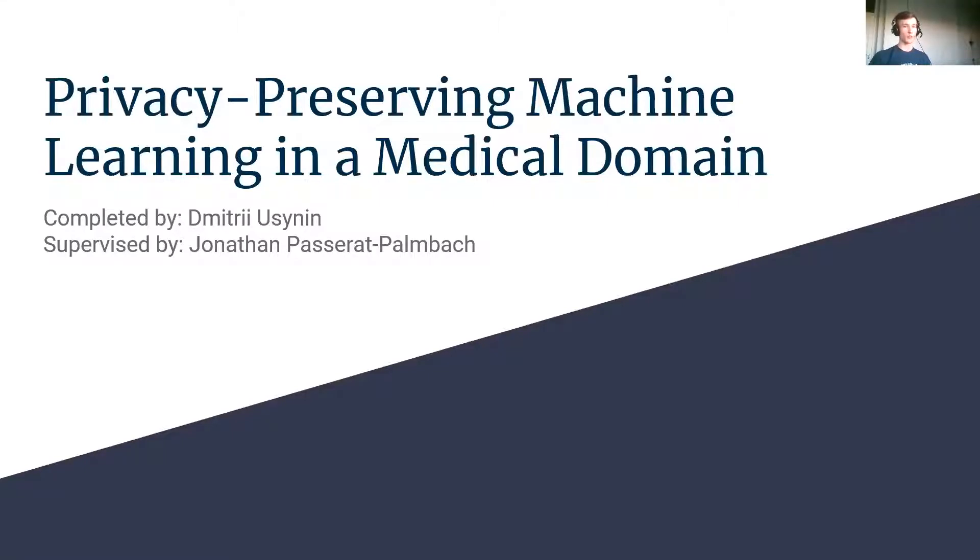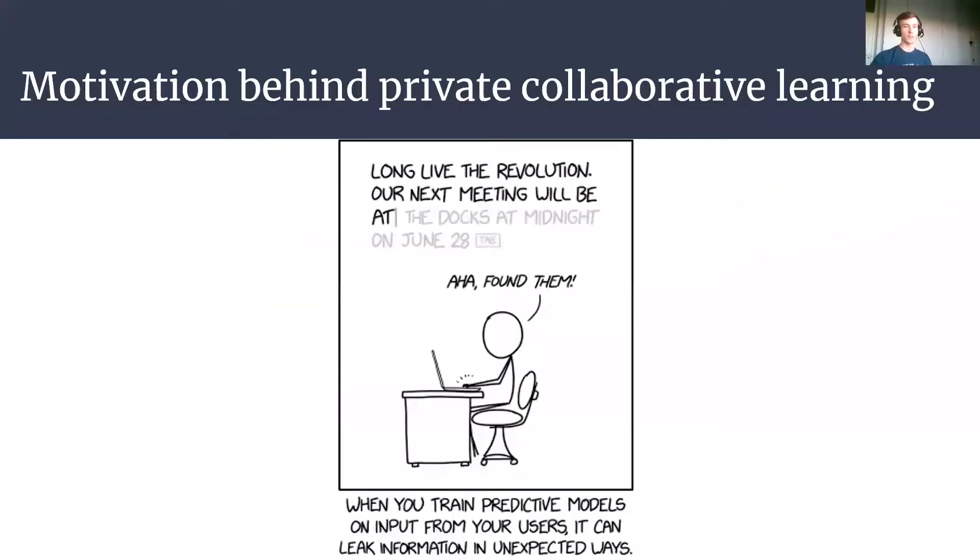So this project is all about connecting privacy preservation and machine learning. The underlying issue is that the current ways of conducting collaborative machine learning are flawed. We tend to disclose too much information and violate things such as GDPR or HIPAA in two different ways. The first one being sharing the data directly, which is a big no-no, we should never do that.